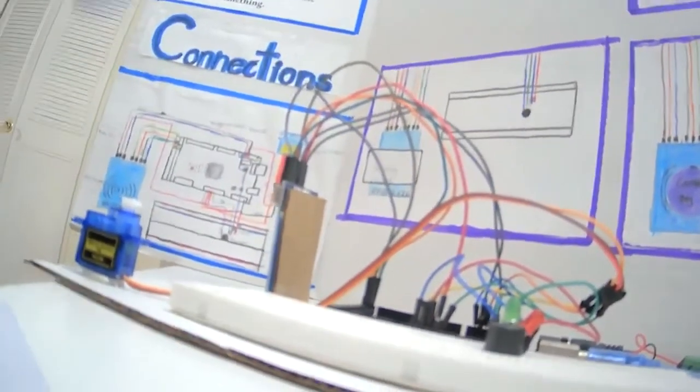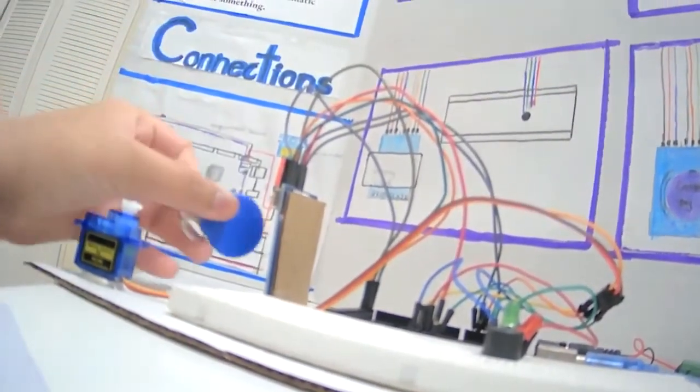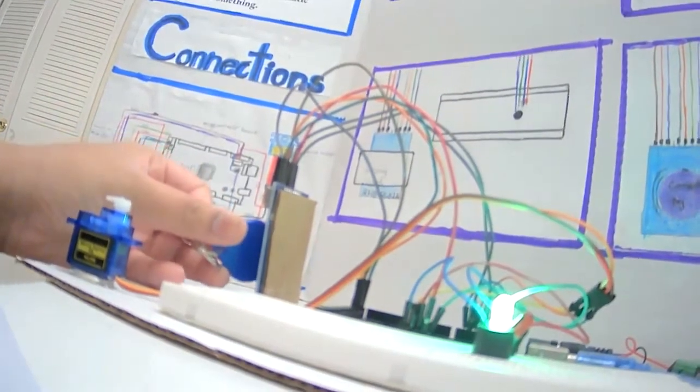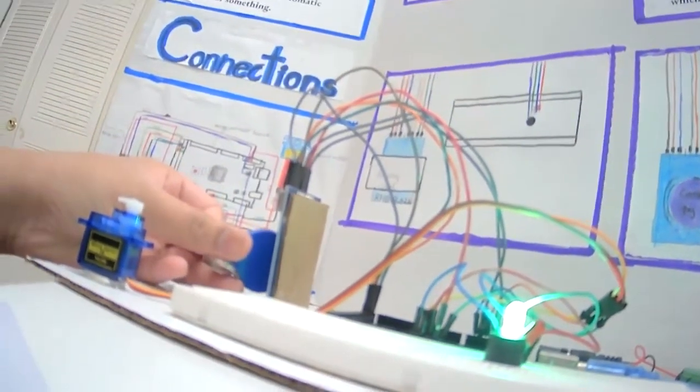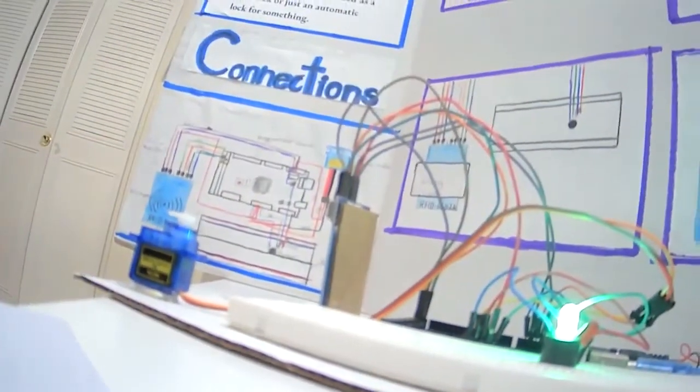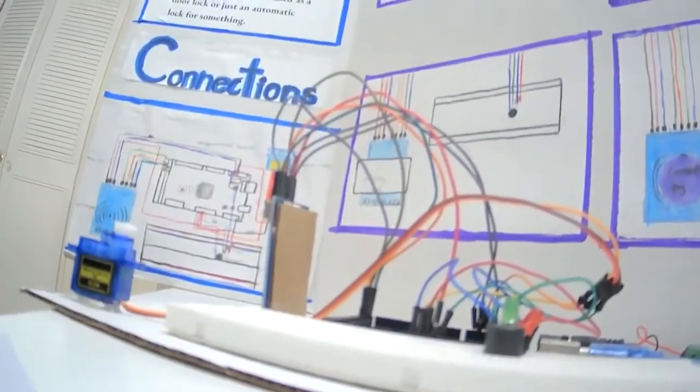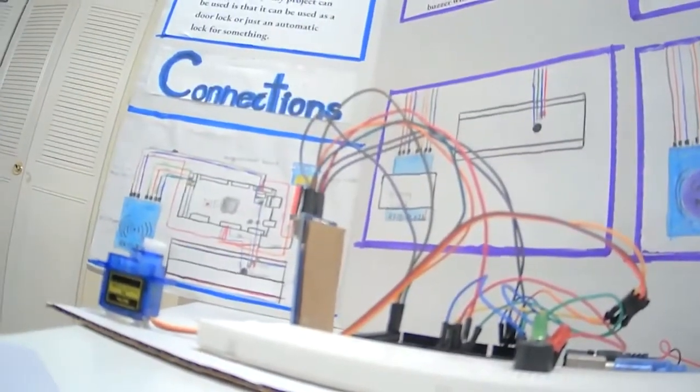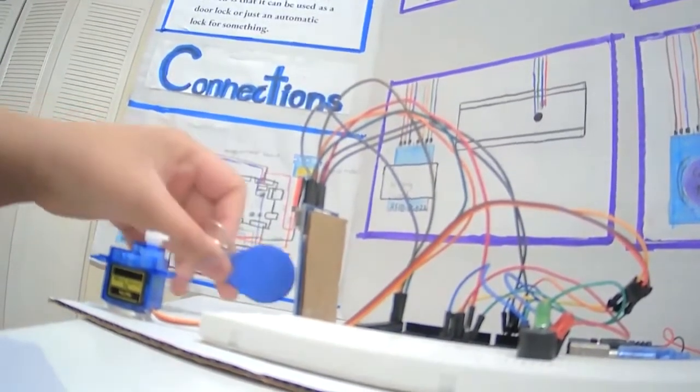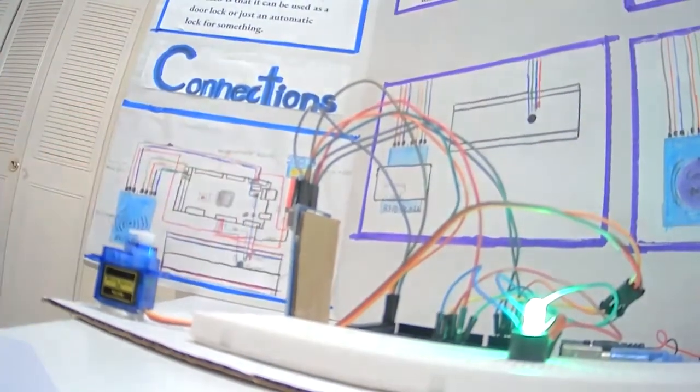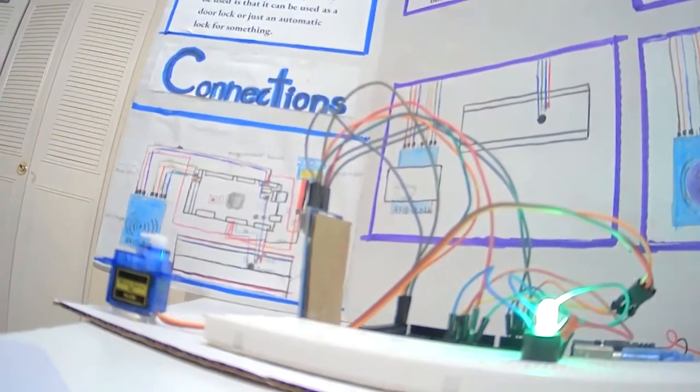But when we put the correct ID to the RFID module, the green LED lit up, the servo motor turned 180 degrees, and the buzzer made a sound, which we humans call correct. When the servo motor turns 180 degrees, it's when we get a mask.